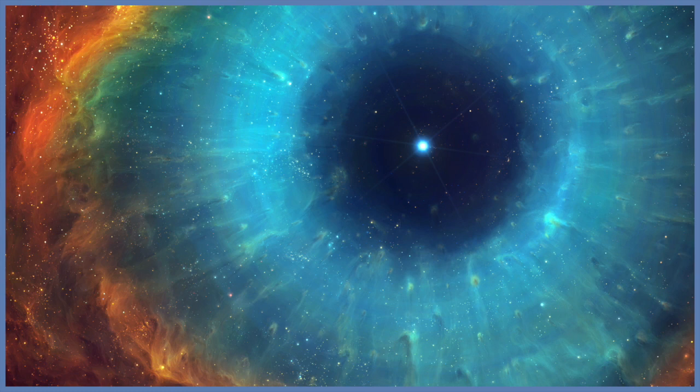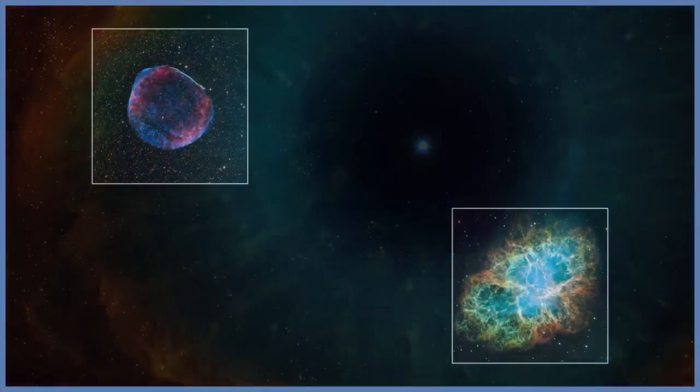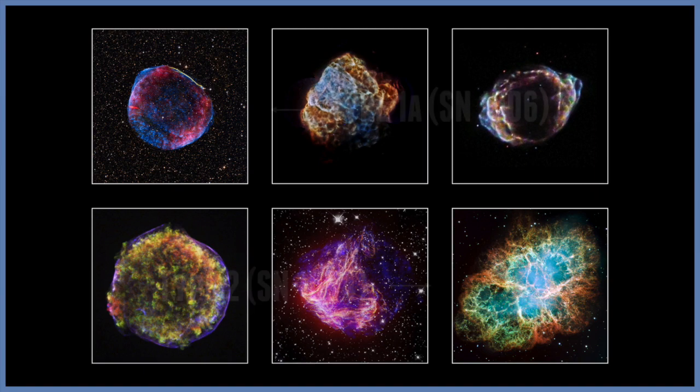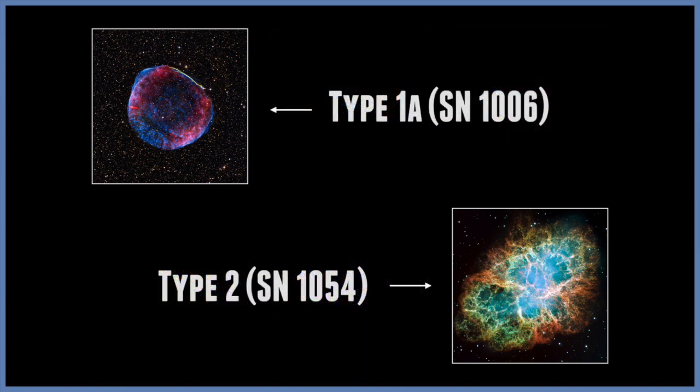Supernovae are basically categorized by astronomers in different ways. They're not just one big massive explosion, there's different types of them. Supernovae are categorized by letters and numbers, and these categories are defined by the brightness and dimness of a supernova, and also which elements are detected in the light of the explosion.